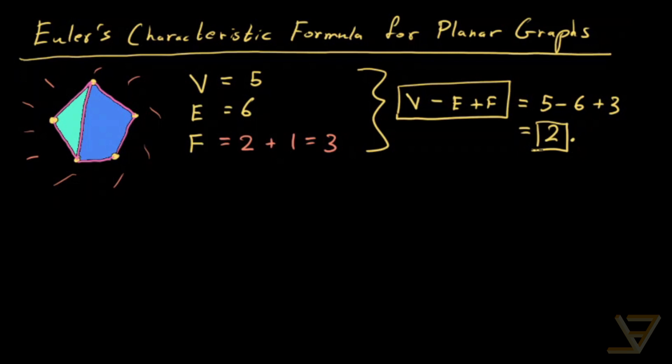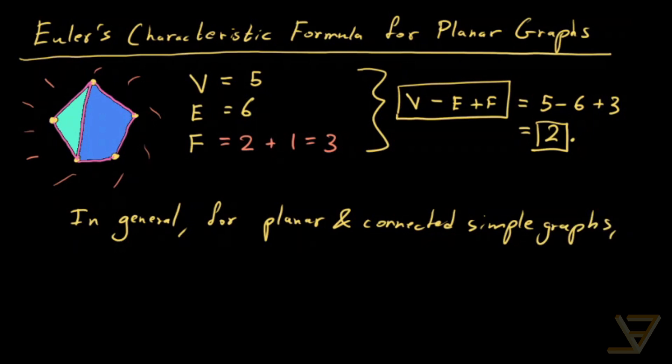And we're going to be deriving this formula. So in general, for planar and connected simple graphs, simple meaning it's not directed, it's not infinite, and it's not a multigraph, it's just a simple graph.